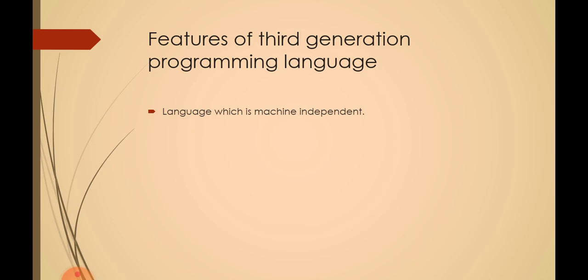Another reason was that first generation and second generation languages were machine dependent. That's why the features of third generation language are: first, simple and user friendly language; and second, language which is machine independent.